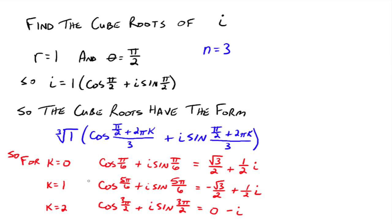For k equals 1, we plug 1 in for k: pi over 2 plus 2 pi gives 5 pi over 2, divided by 3 gives 5 pi over 6. So the second root is cosine of 5 pi over 6 plus i sine 5 pi over 6, which equals negative square root of 3 over 2 plus one-half i — also a cube root of i. For k equals 2, we get pi over 2 plus 4 pi giving 9 pi over 6, which simplifies to 3 pi over 2, giving cosine of 3 pi over 2 plus i sine 3 pi over 2, which equals negative i. These are the three complex cube roots of i.